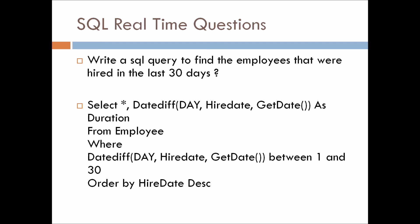If they ask in terms of months or years, you just have to change the interval. So if they ask for the last 30 months, you just replace 'day' with 'month' here, and in that way you will get the employees hired in the last 30 months.